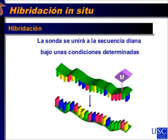In CGH, the advantage is that it does not require fresh tissue and any biological material can be used. The reference DNA is generally labeled with a red fluorochrome and the patient DNA with a green fluorochrome. However, CGH has a disadvantage: it does not detect alterations that do not modify the quantity of DNA, such as balanced translocations and inversions.